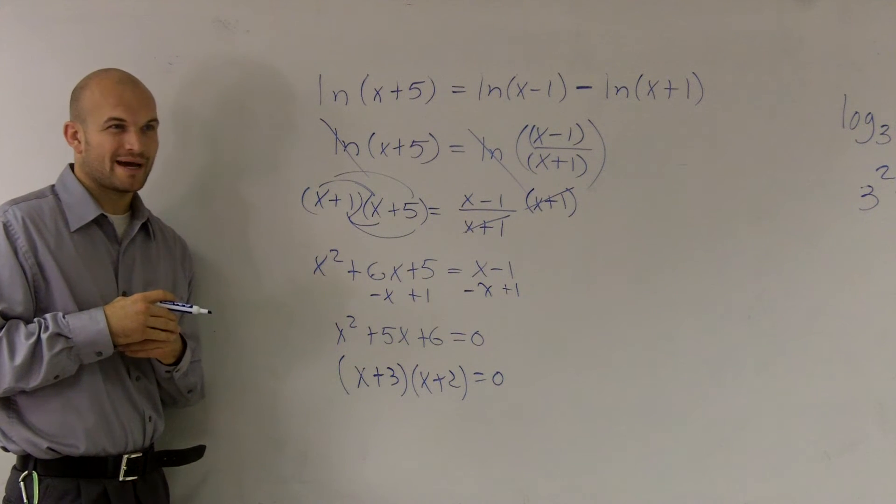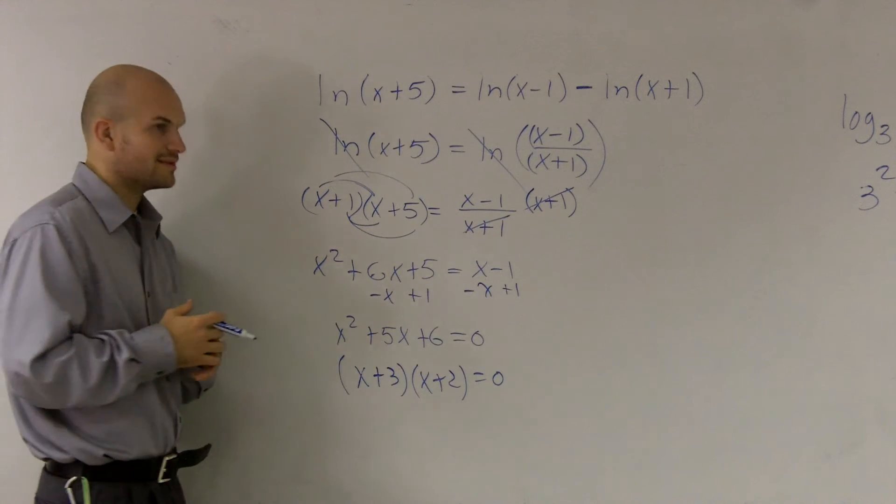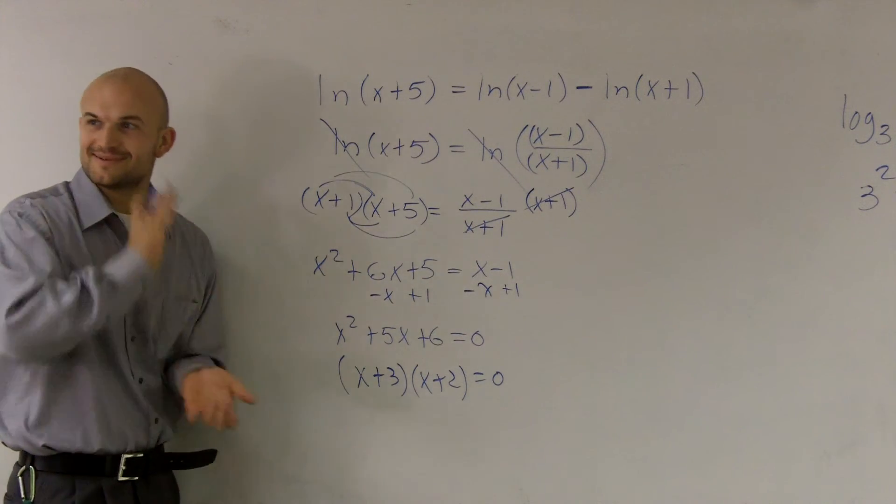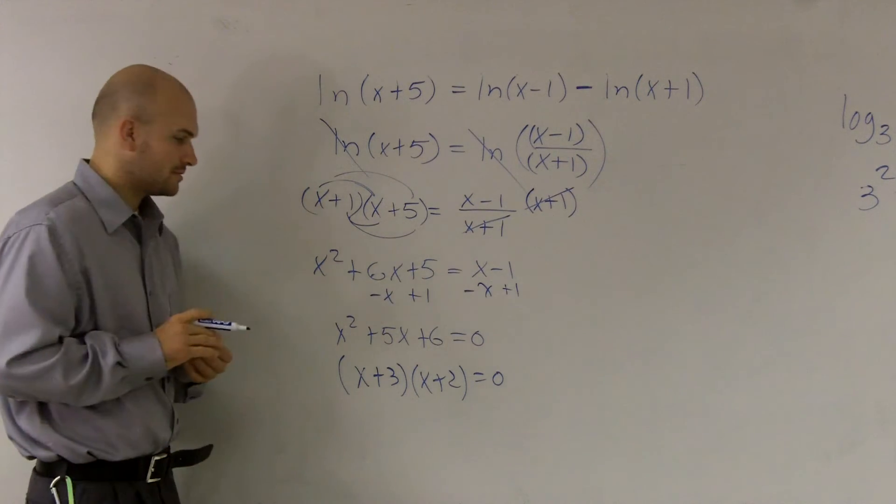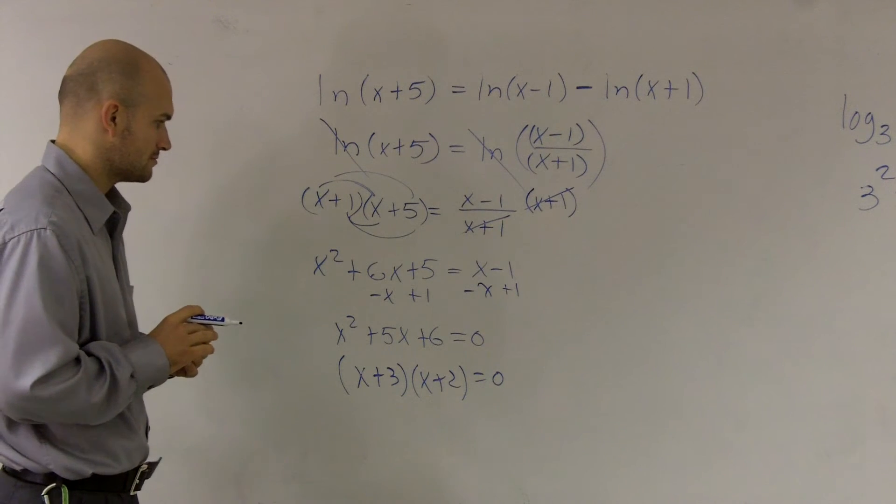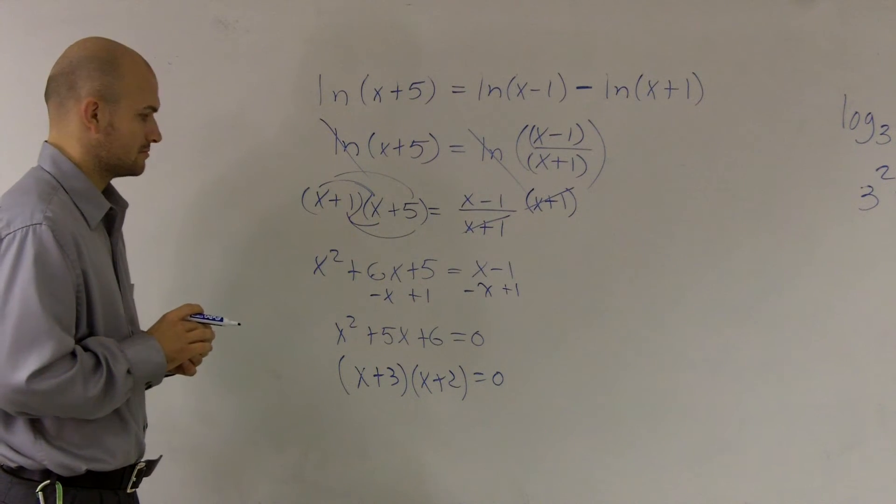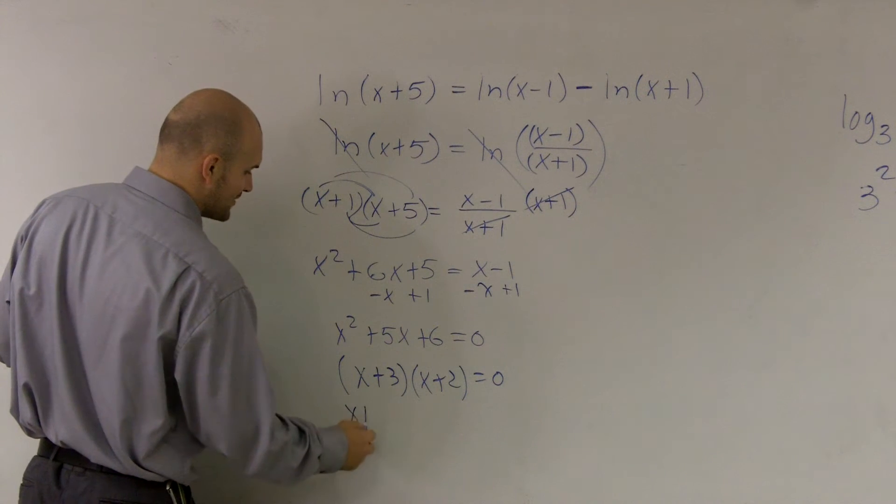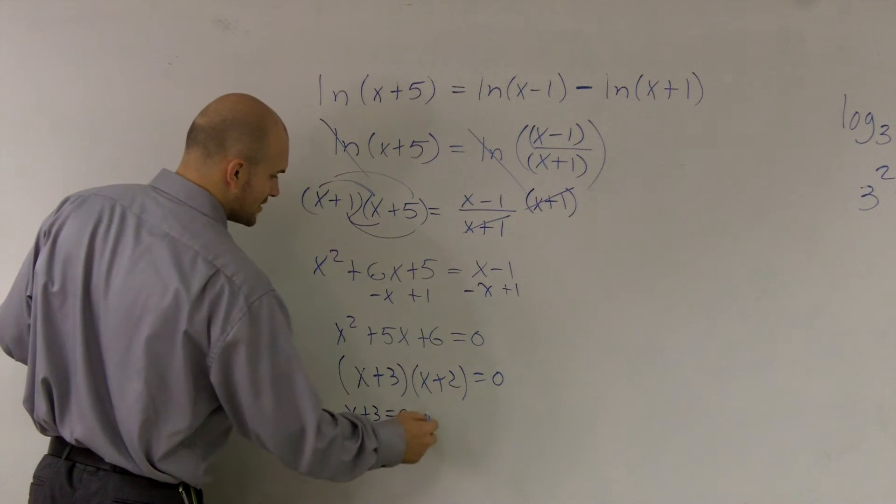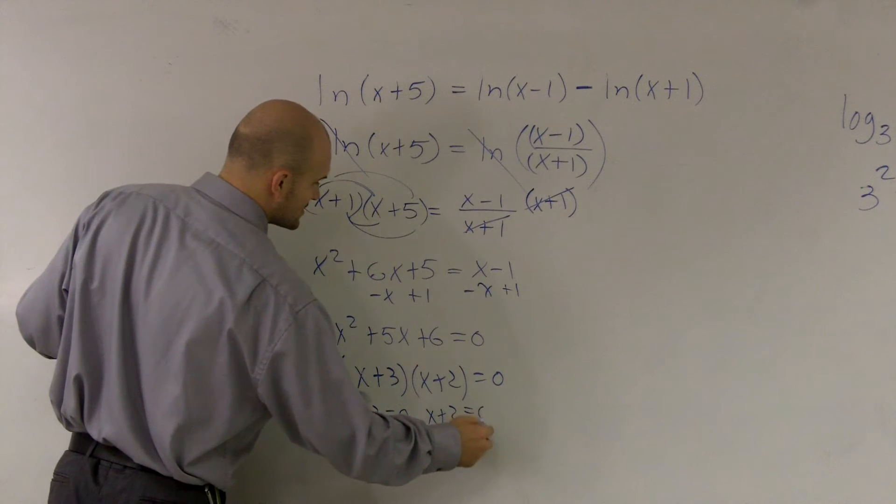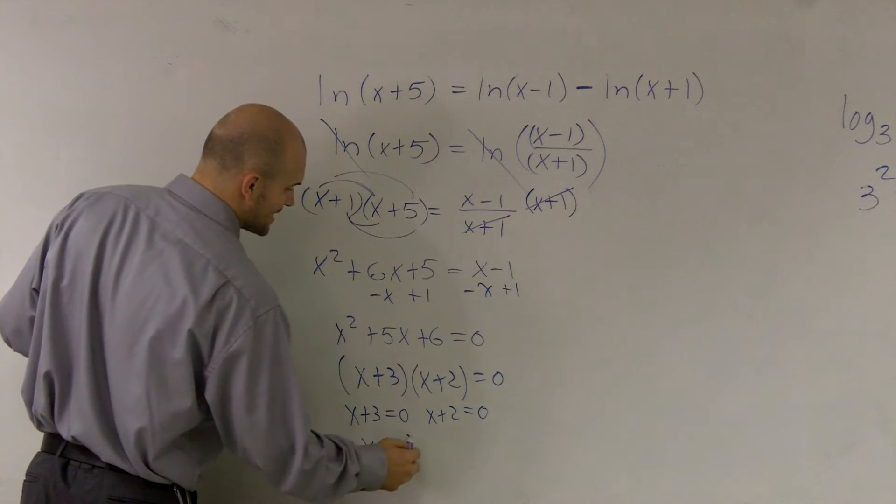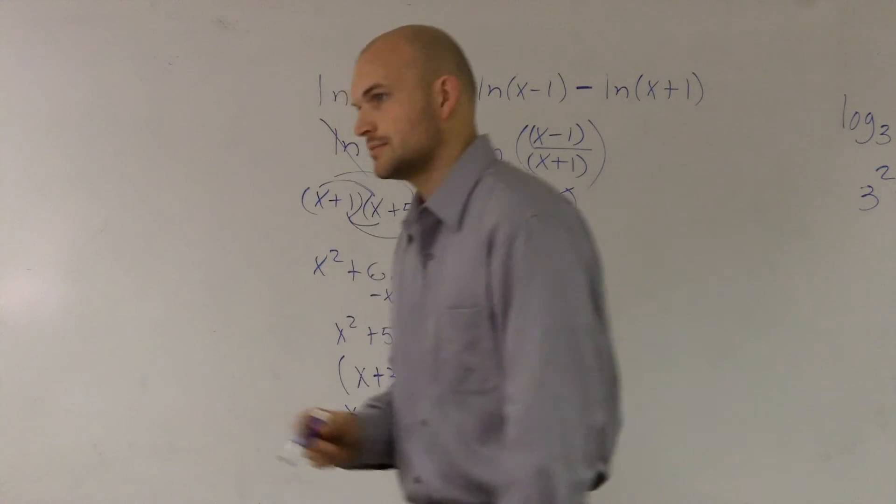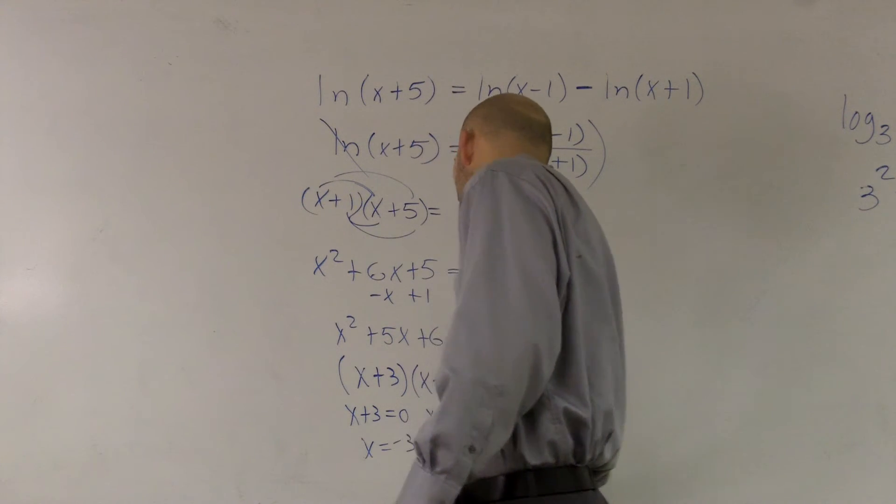Factoring, I know I'm doing it here in my head, but like I said, that factoring works. So therefore I have x+3=0 and x+2=0. Therefore x=-3 and x=-2.